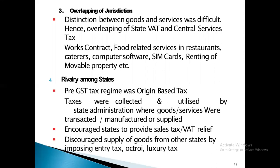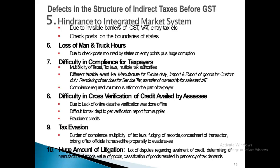Rivaling among states: the pre-GST tax design was origin-based — taxes were collected and utilized by the state where goods and services were transacted and manufactured. This encouraged states to provide sales tax and VAT relief on goods and services, and discouraged supply of goods from other states by imposing entry tax, octroi, and luxury tax. Hindrance to integrated market system: invisible barriers of CST, VAT, entry tax, and check posts at state boundaries caused loss of time for trucks and led to huge corruption.